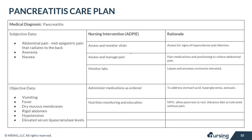The next nursing intervention is nutritional monitoring and education. Patients often want to keep eating, but you need to explain that the pancreas must rest — so nothing by mouth. The diet will be advanced as tolerated and ordered by the doctor once the patient is no longer experiencing pain. In severe cases, parenteral nutrition may be required to inhibit stimulation of pancreatic enzymes and decrease metabolic stress.